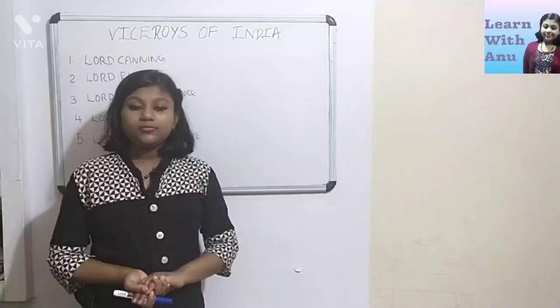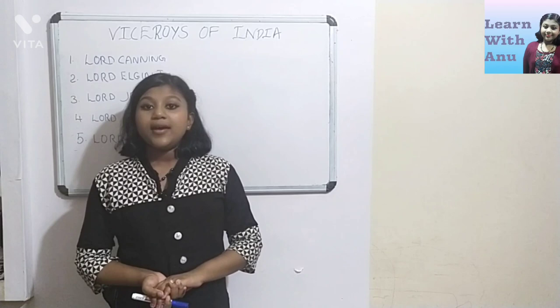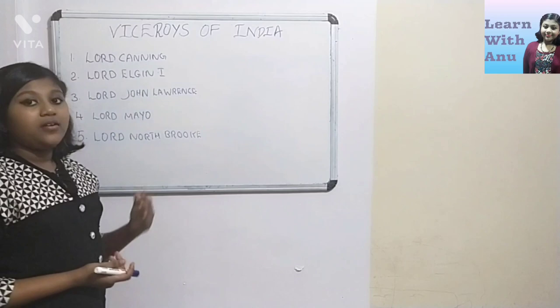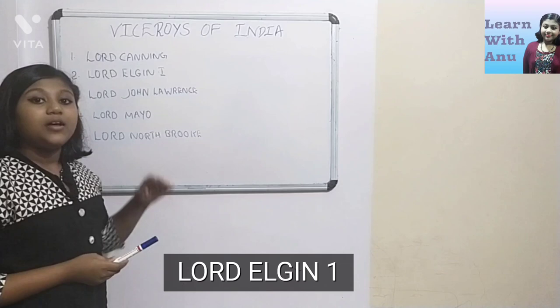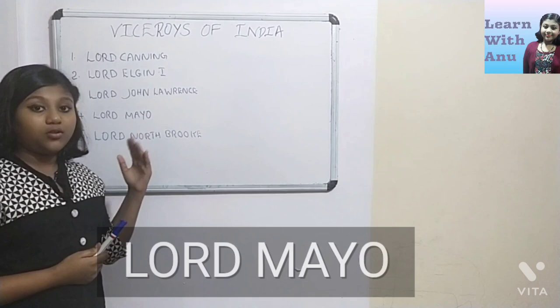There were 20 Viceroys in British India. Lord Canning was the first Viceroy. The second Viceroy was Elgin the first. Next comes Lord John Lawrence as the third Viceroy, and the fourth Viceroy was Lord Mayo.